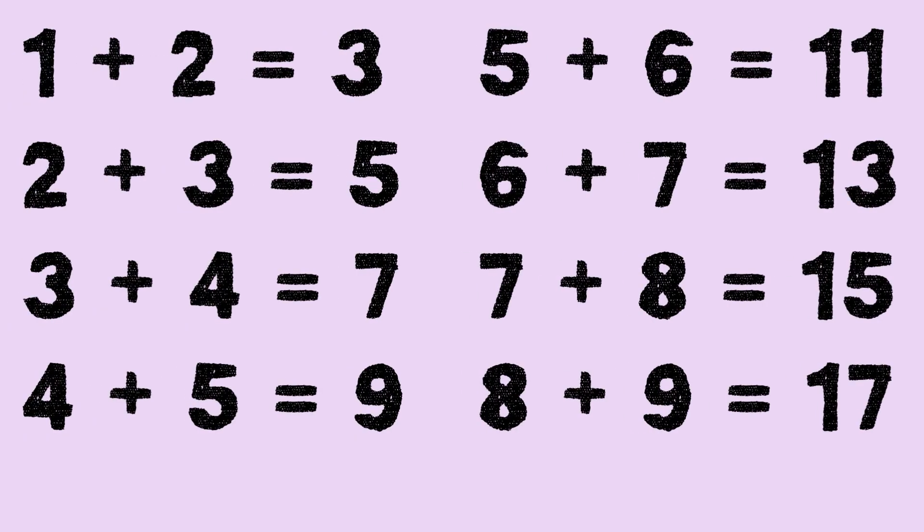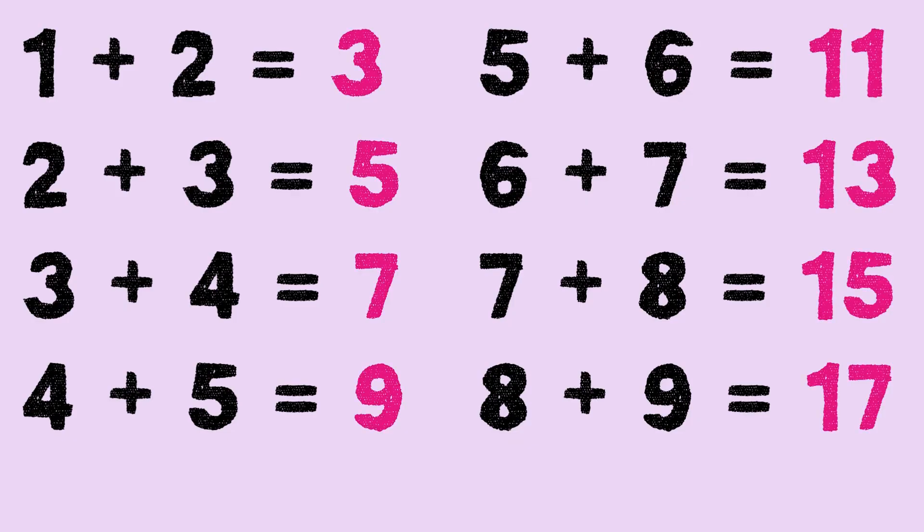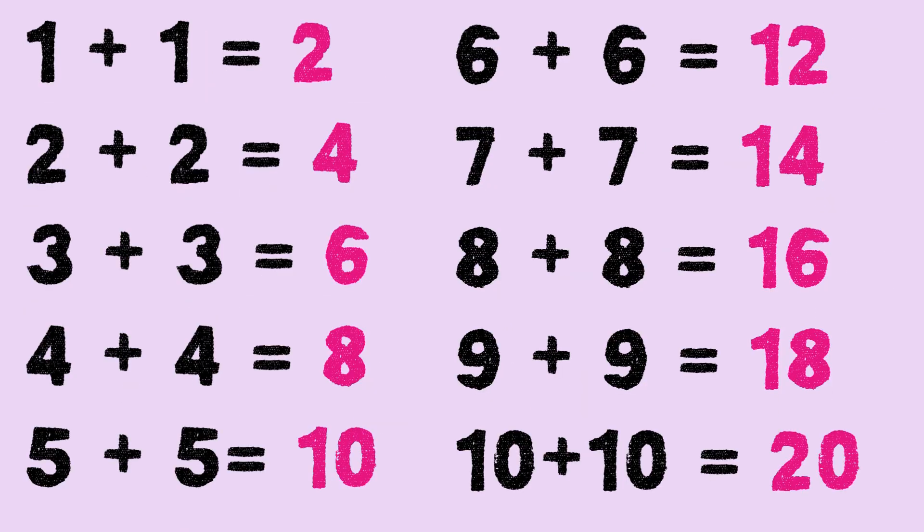Now take a look at all of these near doubles facts and look at the answer to them. What do you notice? Do you notice that it has all odd numbers? So if it's a near doubles fact, you get an odd number, but if it's a doubles fact, it's an even number.